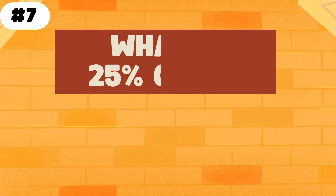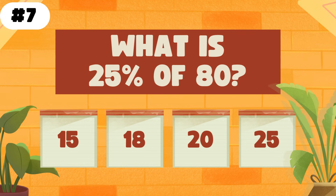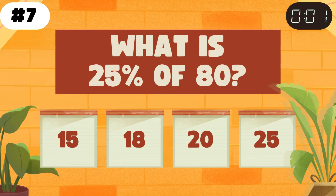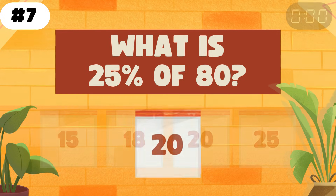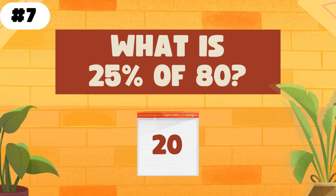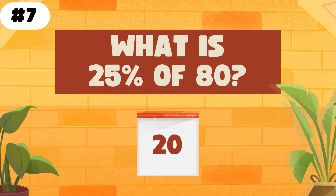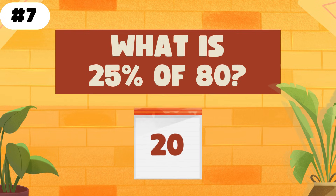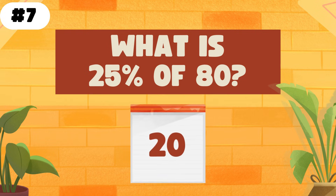What is 25% of 80? The answer is 20. To multiply a number by a percentage, convert the percentage to a decimal and then multiply it by the number.